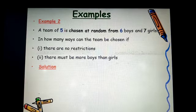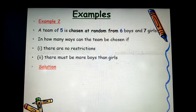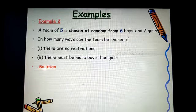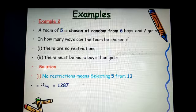Another example. A team of 5 is chosen at random from 6 boys and 7 girls. In how many ways can a team be chosen if there are no restrictions? No restriction means that the 6 boys and the 7 girls are the same. So, selecting 5 from 13. That is 13 combination 5. Giving us 1,287.